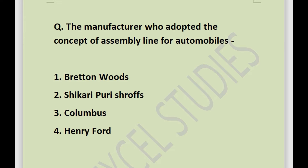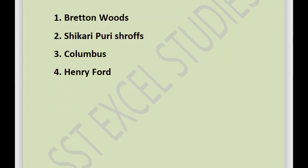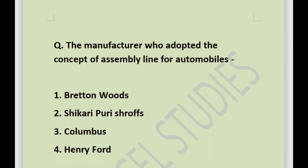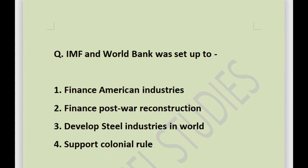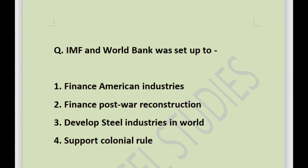Next question: the manufacturer who adopted the concept of assembly line for automobiles — options are Bretton Woods, Shikari Puri Shroffs, Columbus, or Henry Ford. The answer is Henry Ford. It was Henry Ford who adopted the concept of assembly line for automobiles, as he had a car manufacturing industry.